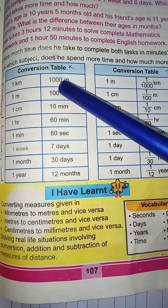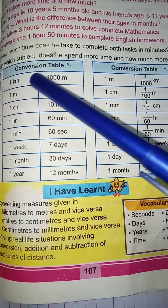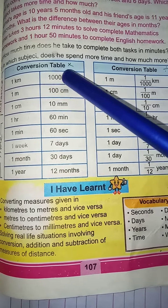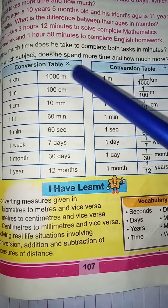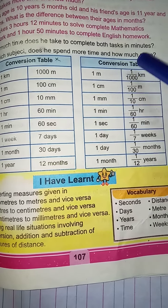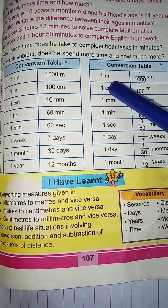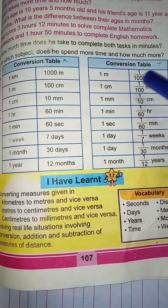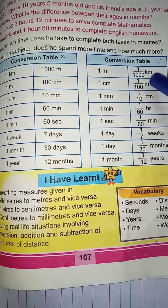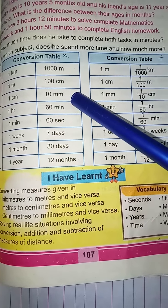If your question is given in kilometers and you need to convert to meters, you multiply your value by one thousand. If you have to convert meters into kilometers, you divide by one thousand. One meter is 100 centimeters, but if you have to convert meters into centimeters you divide your value by 10.